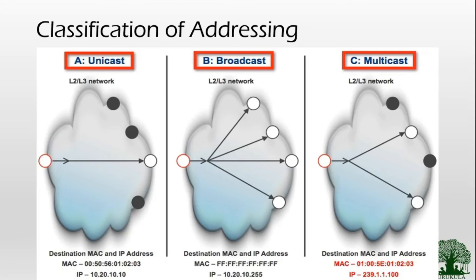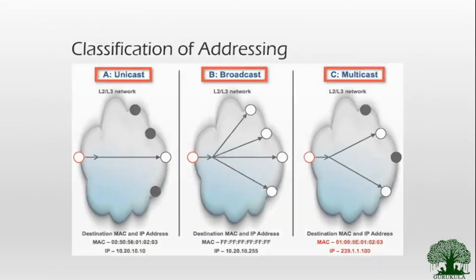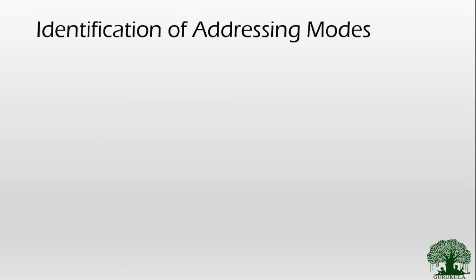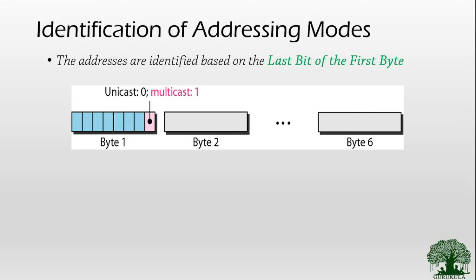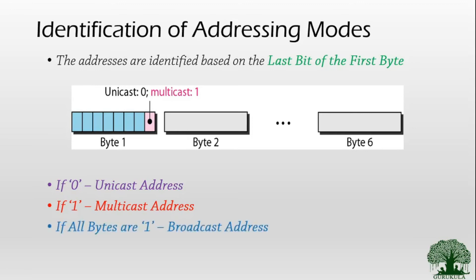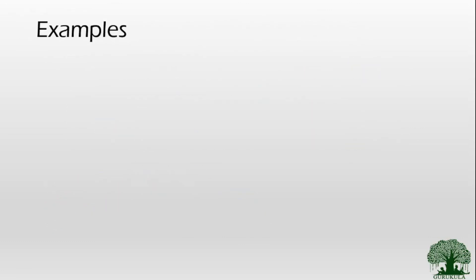Given a MAC address, how do we identify whether it belongs to unicast, multicast, or broadcast? It all depends on the last bit of the first byte. By observing the last bit of the first byte, you can easily determine the address type. If it is zero, the address is a unicast address. If it is one, it is a multicast address. If all bits are ones, it is a broadcast address.